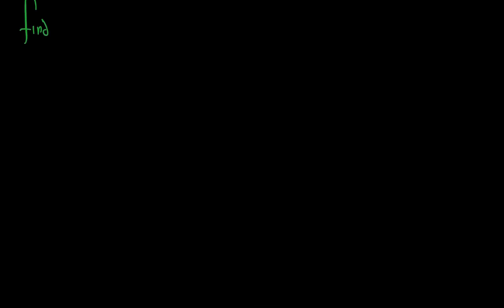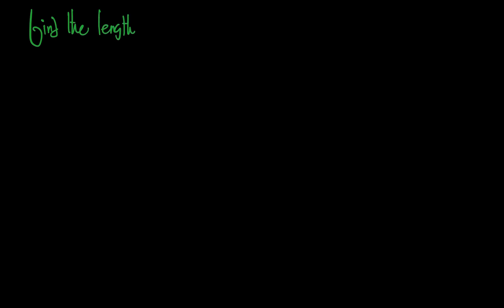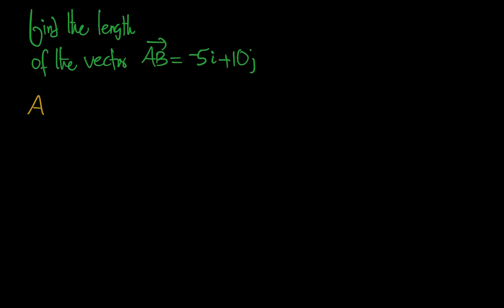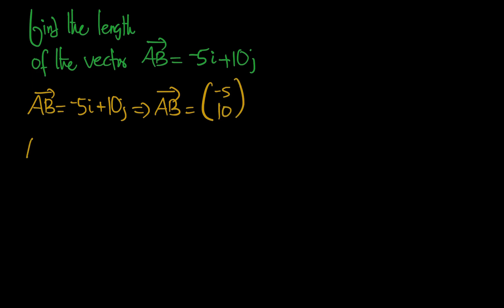Now let's find the length of a vector — note that length, magnitude, and size all mean the same thing. We are given vector AB in standard form: negative 5i plus 10j. We can convert this to component form: the x-component is negative 5 and the y-component is 10.